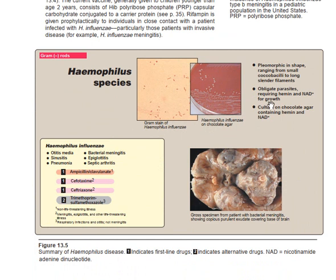Let's visualize the characteristics of Haemophilus influenzae. It is pleomorphic in shape but best described as rod-shaped — pleomorphic rods ranging from small coccobacilli to bacilli. That is the specific characteristic of Haemophilus influenzae, ranging from coccobacilli to long slender filaments. It is an obligate parasite, not capable of living outside a host.